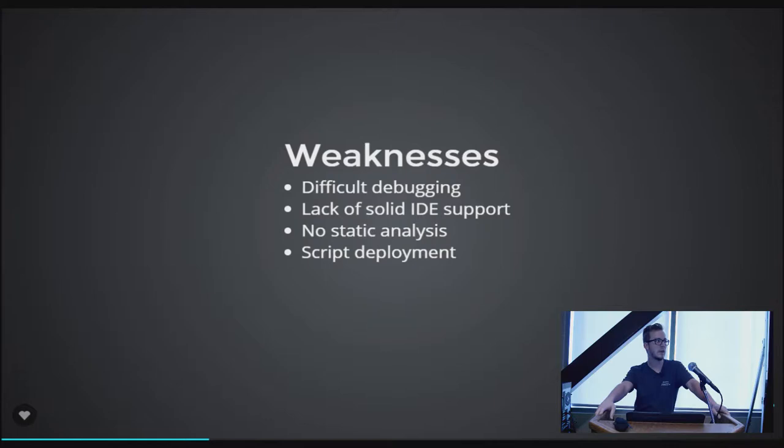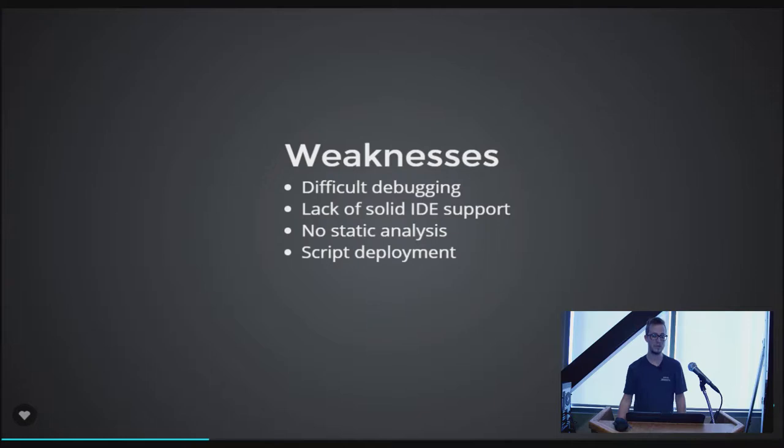But you don't get to be a superhero without some weaknesses. Difficult debugging is a very apparent one — you can't debug a Jenkins pipeline while it runs without basically debugging the entire Jenkins instance. It's a bit hefty to work through because there's a lot of concurrency and asynchronous activity happening in that instance.